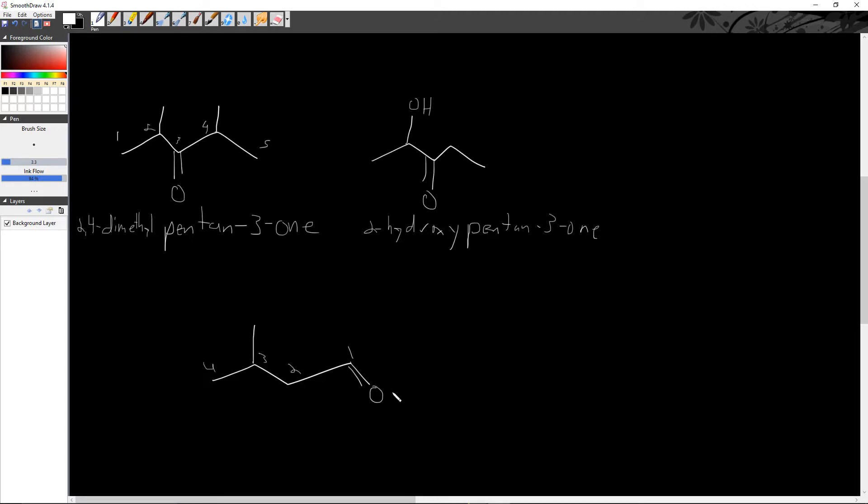All right. So we know we're working that double bonded oxygen is on an end carbon. So we're using an aldehyde, four carbon chain. So bute, all single bonded, butan, al to indicate double bonded oxygen on the end. We have a methyl group coming off of three. So this is 3-methyl butanal.